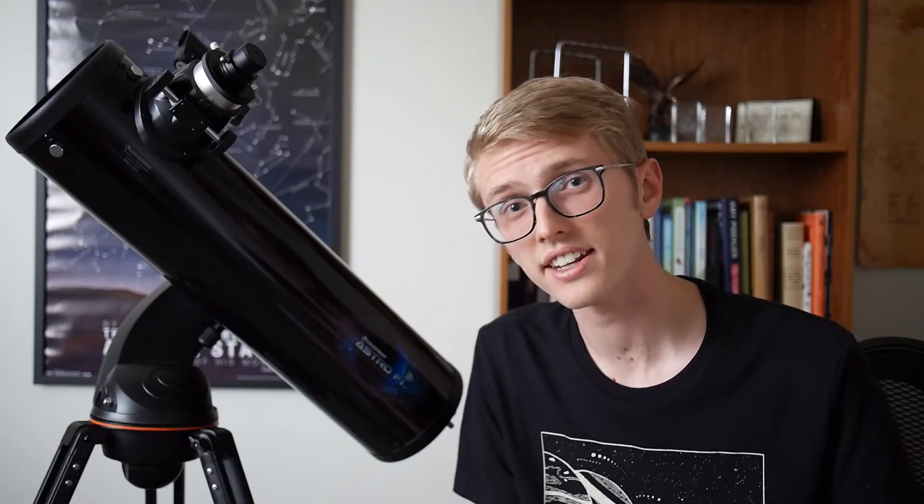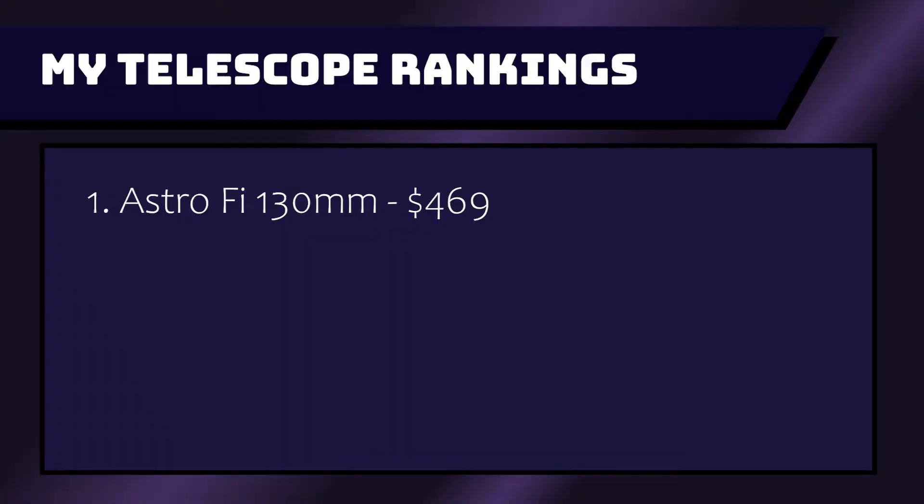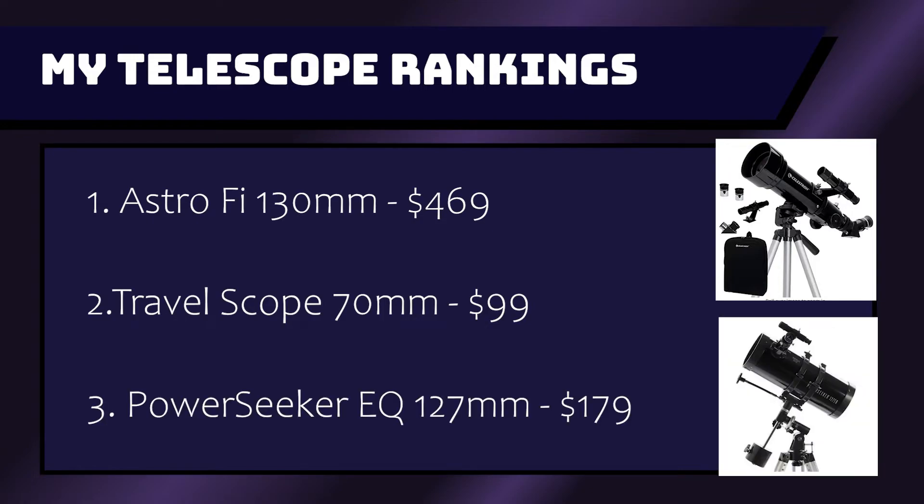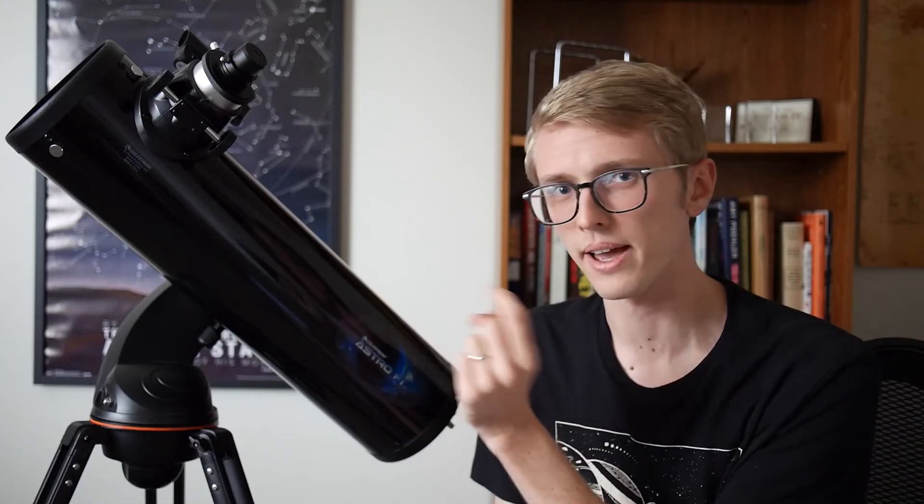Compared to the other two I've had, I'd rate them in this order. The Celestron Astrofi 130 millimeter at $469 being number one. Second place would be the Travelscope 70 millimeter at $99. And then third place, the Celestron EQ 127 millimeter at about $179. Don't get that one. It's not very good, hard to collimate, and so it's difficult to get good views. It's heavy. This one's just way better. I mean, it is more expensive, so that makes sense. But yeah, that would be my order for these three.